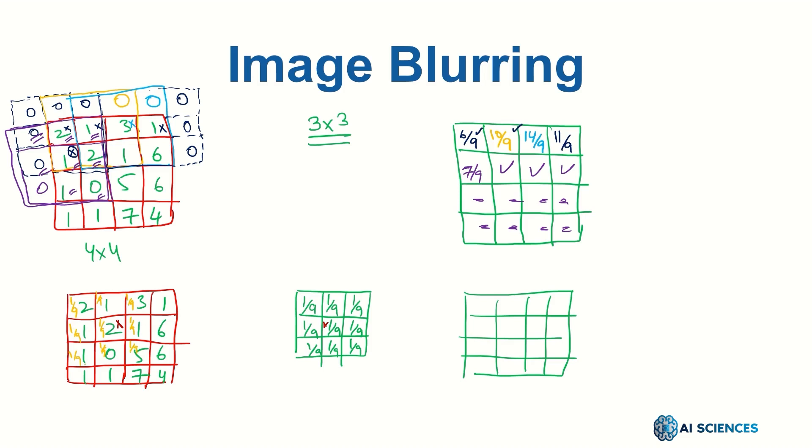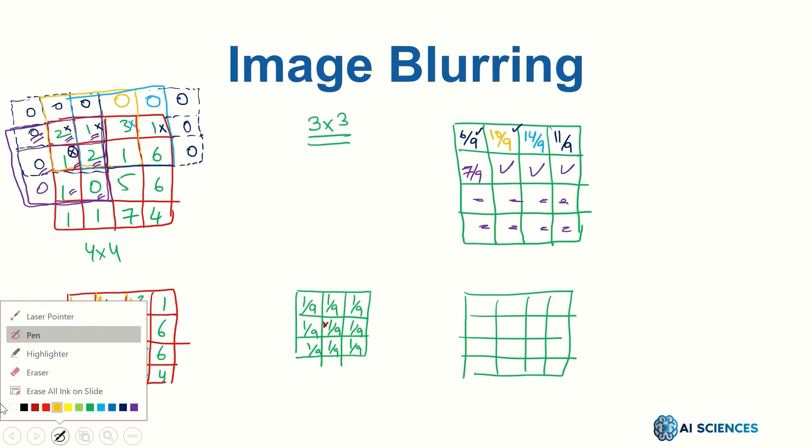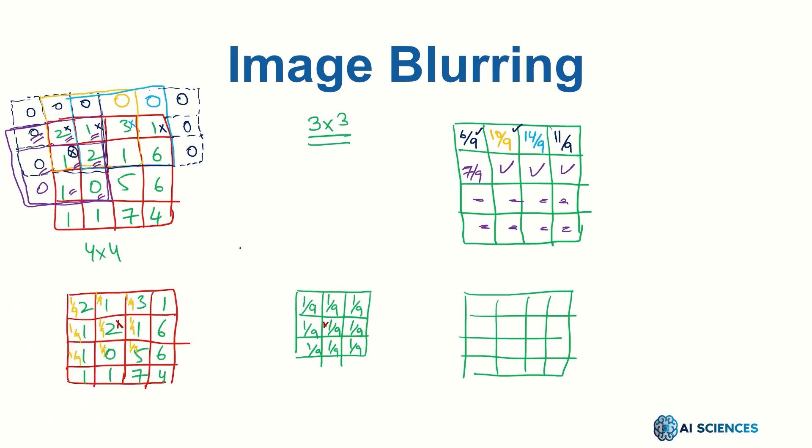Now if I take just the dot product of the coinciding values together, which means if I just multiply the filter values and the image values and I add all these products together, the result will be 1/9 into 2 plus 1/9 into 1 plus 1/9 into 3 plus 1/9 into 1 plus 1/9 into 2 plus 1/9 into 1 plus 1/9 into 1 plus 1/9 into 0 plus 1/9 into 5.